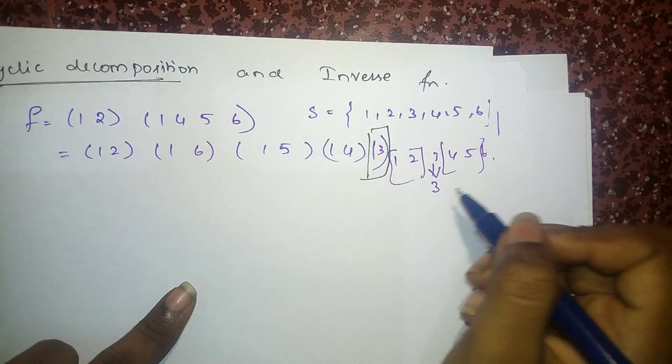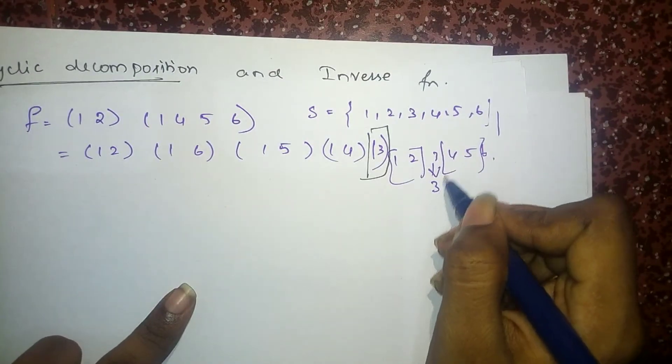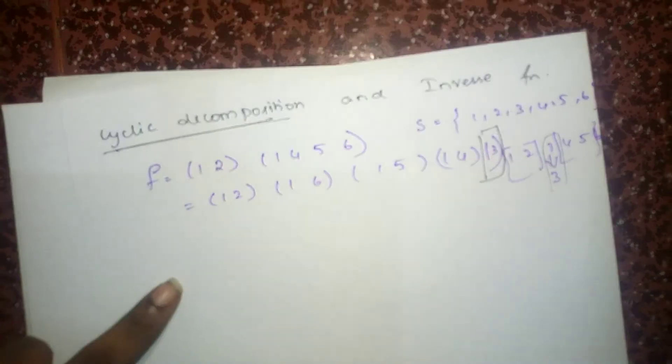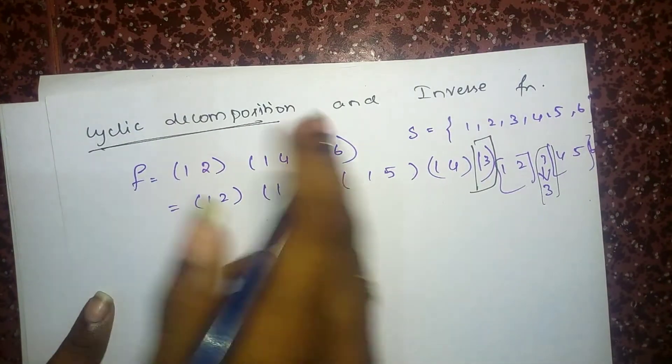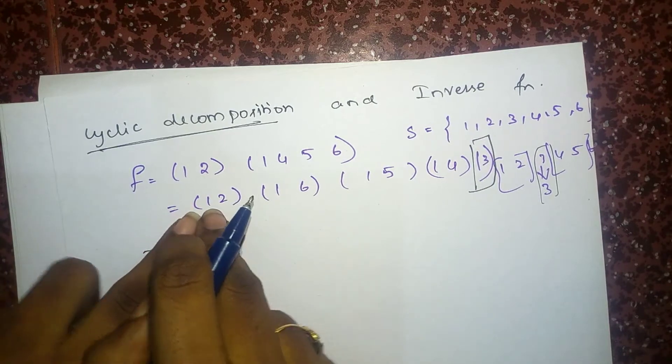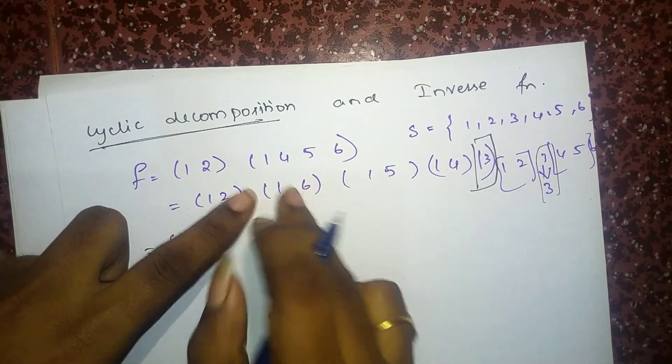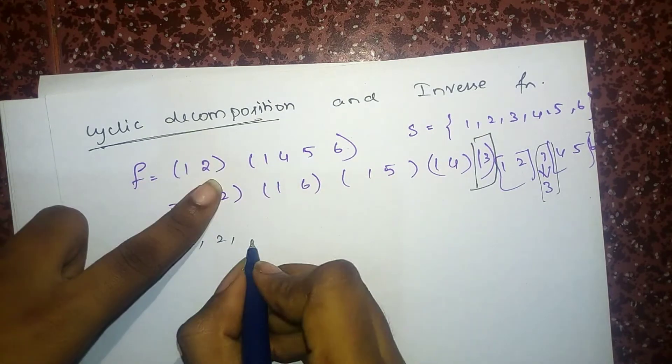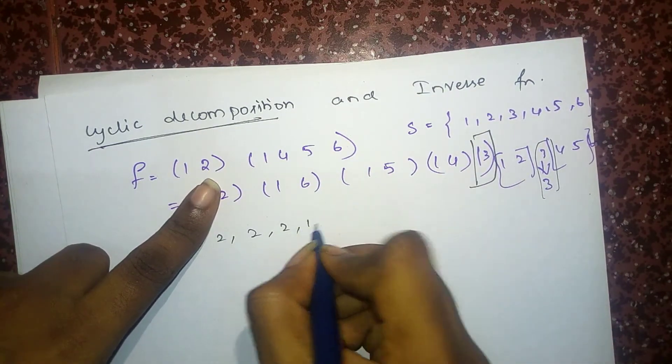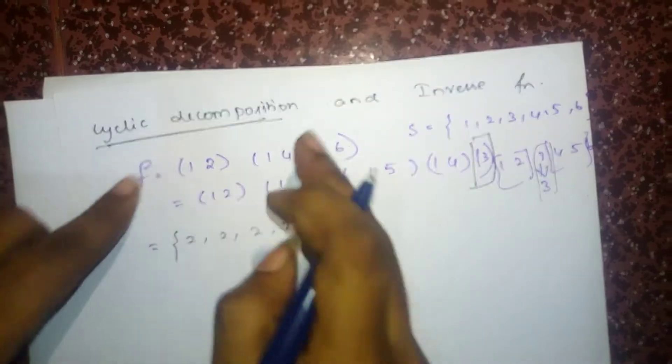Okay friends, this 3 separately, because 3 is mapped to 3 itself and it is an identity mapping. So cyclic decomposition is length of the cycle 2, and 2, and 2, and finally this 1 has to be added. This is the cyclic decomposition of F.